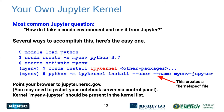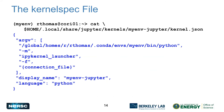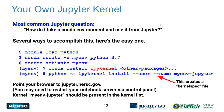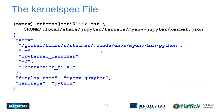You'll probably need to restart your notebook server if you do this while it's running. The kernel spec file is located at `~/.local/share/jupyter/kernels/<kernel-name>/kernel.json`, and all it is is the command line arguments needed to start up IPython.